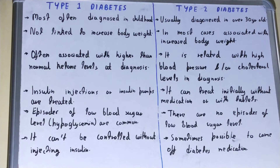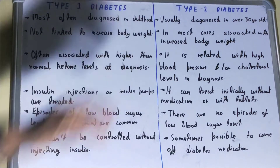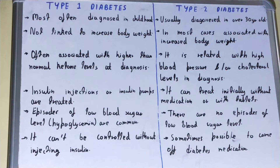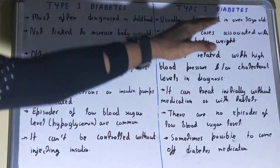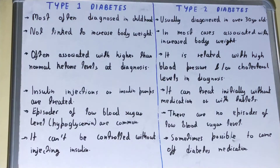Next, Type 1 diabetes is not linked to increased body weight — it is generally linked to genetics, and that's why it has no relation with body weight. But Type 2 diabetes, in most cases, is associated with increased body weight or obesity.